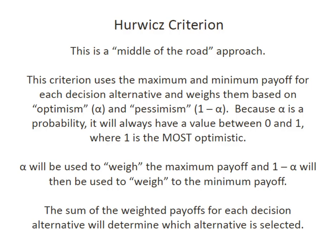Because alpha is a probability, it will always have a value between 0 and 1. We think of 1 being the most optimistic and 0 being the most pessimistic. So I'm going to use alpha to weigh the maximum payoff and 1 minus alpha to weigh the minimum payoff. I'm going to then sum these weighted payoffs for each decision alternative and that's going to determine which decision alternative I'm going to select.